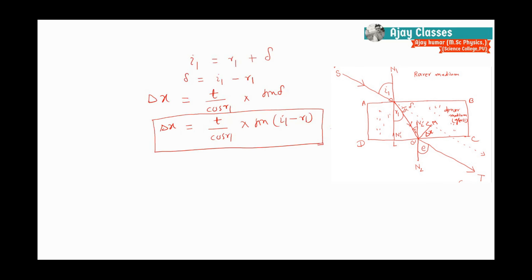This is the required expression for lateral displacement. As angle I increases, delta X also increases. Lateral displacement depends directly on the thickness of the glass layer, and lateral displacement will increase with increasing angle of incidence I1. This completes the discussion on finding lateral displacement in the case of refraction through a glass slab.